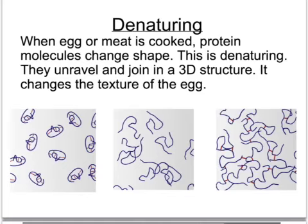An identical process happens when meat is cooked. Meat also contains similar proteins, and when the meat is cooked it changes its texture because these individual globular proteins unravel and form into a new three-dimensional structure. We say that the protein is being denatured — it's changing its shape permanently.